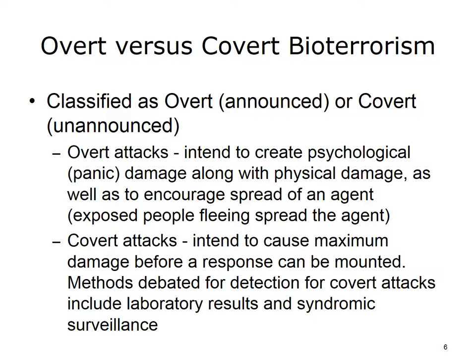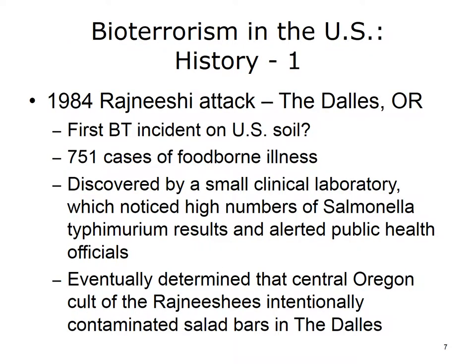Covert attacks are intended to cause as much damage as possible before an effective response can be mounted. In the U.S., there have been few bioterrorism attacks. A short list might include the military's apparent distribution of smallpox-contaminated blankets to Native Americans in the 1700s. The list definitely includes a 1984 incident in Oregon when a cult intentionally contaminated salad bars, causing 751 cases of food poisoning. This event was considered by some to be the first incident of bioterrorism on U.S. soil, though others disagree, citing examples like the one mentioned earlier.